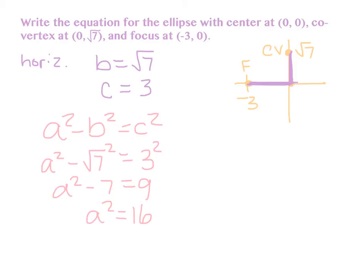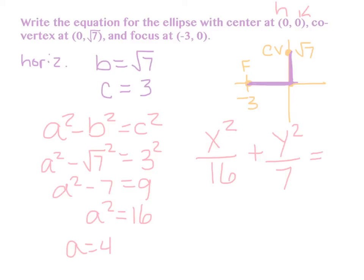Now that I know A, B, C, and H and K, I can write my equation. This time it's horizontal, so it's going to be X minus H — so X squared over A squared, which is 16 — plus Y minus K, which is 0, so Y squared — over B squared. If I square the square root of 7, I get 7. And it equals 1. It always equals 1.